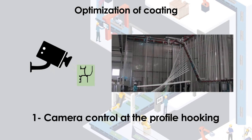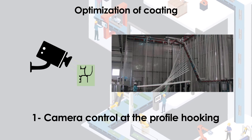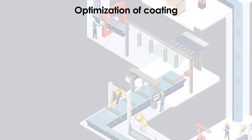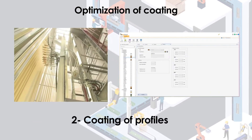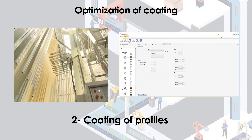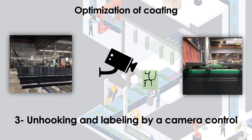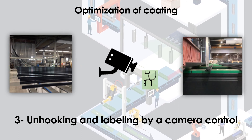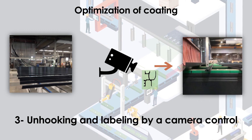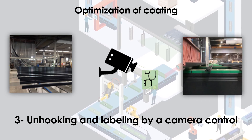An intelligent camera recognizes the shape of the profile on the production line when hooking to make a check. The profiles are then coated, and KM Extrusion manages the powder recipes and the actual consumption. When the coated profiles are unhooked, an intelligent camera identifies the shape of the profile once again to send a printing order to a robot for automatic labeling.